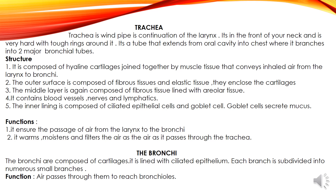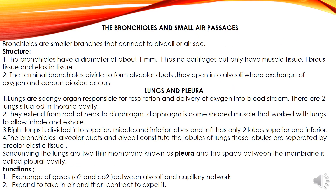Functions of the trachea: it ensures the passage of air from the larynx to the bronchi, and it warms, moistens and filters the air as it passes through. The bronchi are composed of cartilage and are lined with ciliated epithelium. Each bronchus is subdivided into numerous small branches through which air passes to reach the bronchioles. The bronchioles are small air passages and smaller branches that connect to the alveoli or air sacs. They have a diameter of about 1 mm and have no cartilage, only muscle tissue, fibrous tissue and elastic tissue. The terminal bronchioles divide to form alveolar ducts, which open into alveoli where the exchange of oxygen and carbon dioxide occurs.